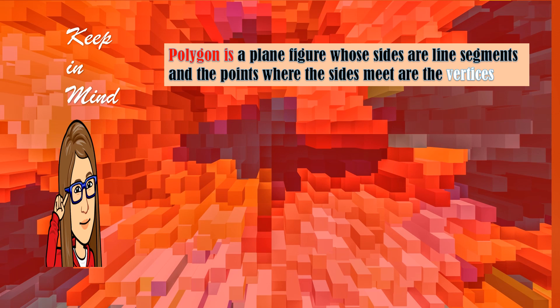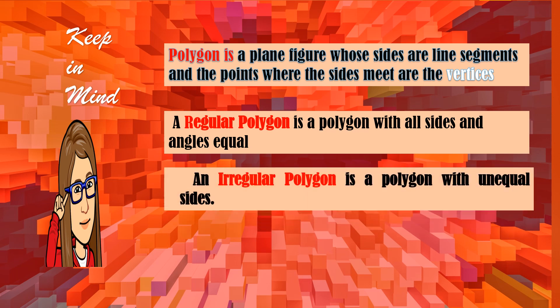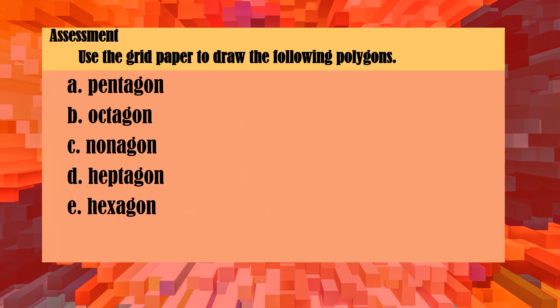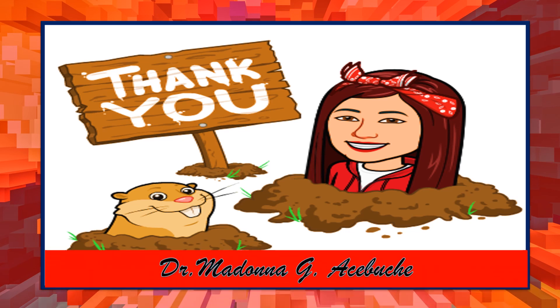Okay class, keep in mind: a polygon is a plane figure whose sides are line segments and the points where the sides meet are called vertices. A regular polygon is a polygon with all sides and angles equal. And an irregular polygon is a polygon with unequal sides. For your assessment, use the grid paper to draw the following polygons. I hope you learned something today. This is Mama Do. See you on our next lesson. Thank you. Bye.